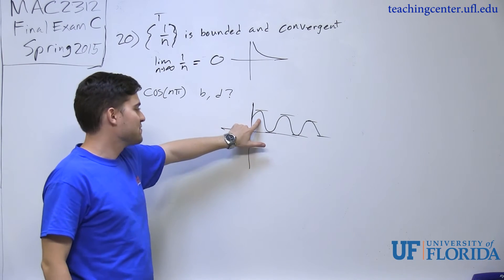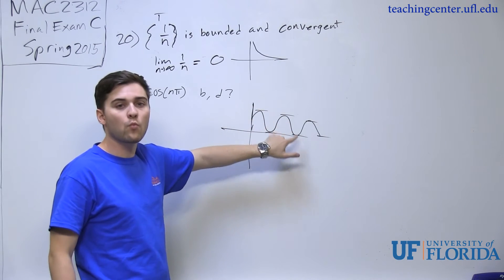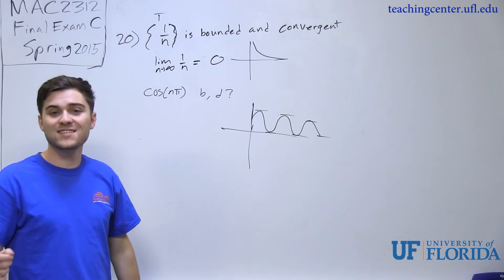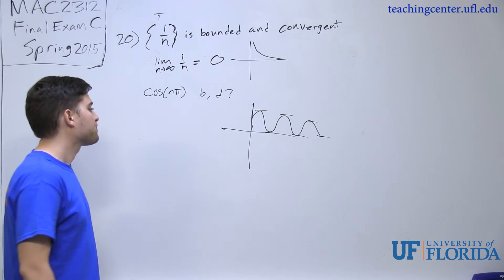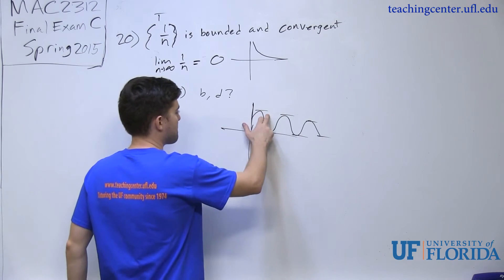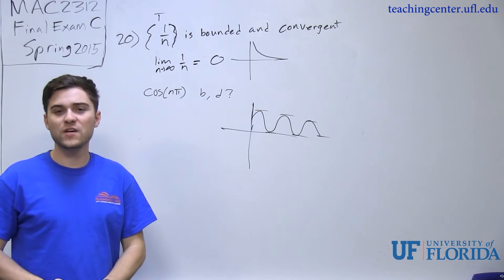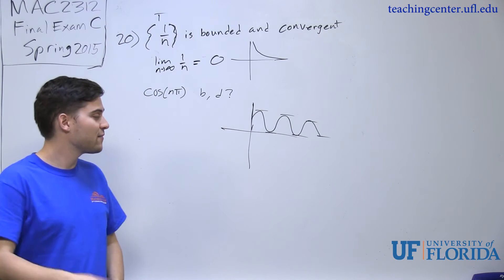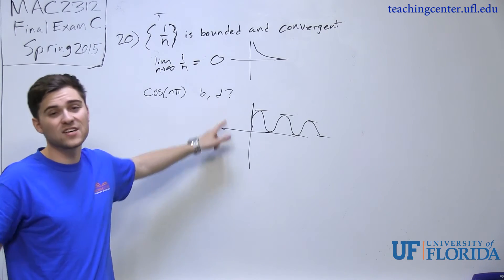However, is it bounded? It is in fact. So it goes between 1 and negative 1, oscillating back and forth. Never exceeds anything past that point. Because of that, we consider this to be bounded and divergent. So this statement is also true.